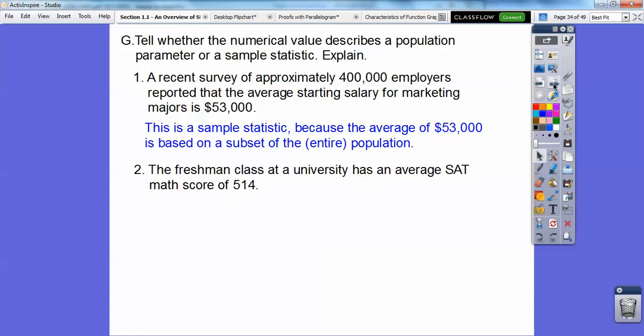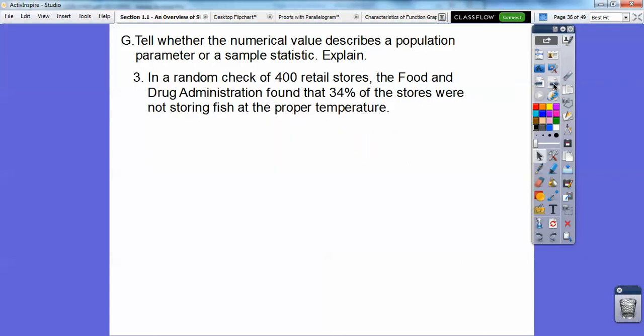How about this one? The freshman class, the whole freshman class, the entire freshman class, hint hint hint, at the university has an average SAT math score of 514. Because the average is based on the entire freshman class, this one is a population parameter. Remember, population means the entire population.